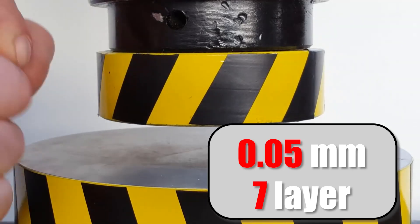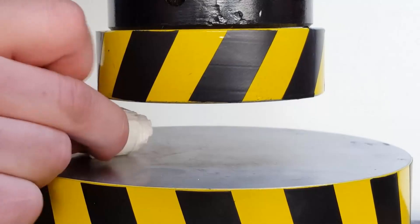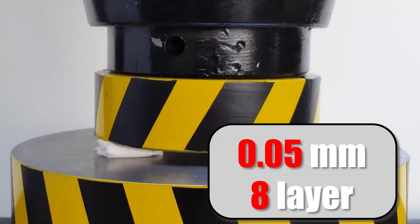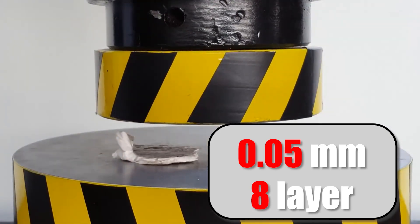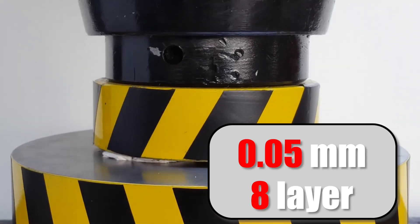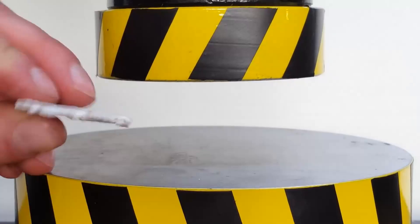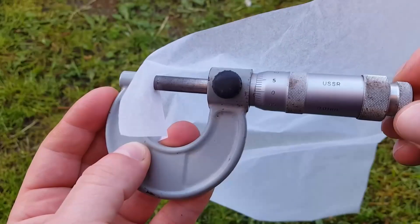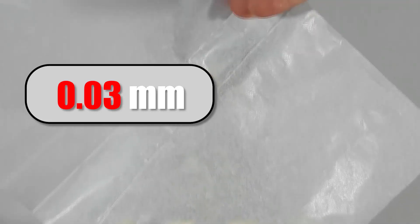There too, everything didn't go very well. At the eighth folding, the press squeezed out all the moisture from the paper, and it became brittle and began to break. We managed to find the thinnest paper that is only on sale. Its thickness is three-hundredths of a millimeter, which is three times thinner than office paper.